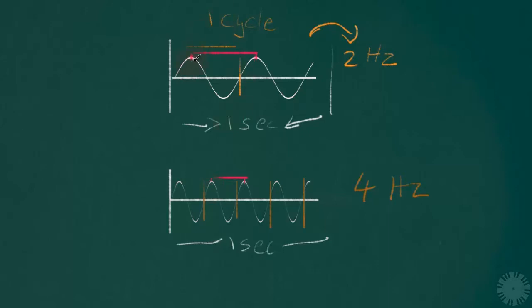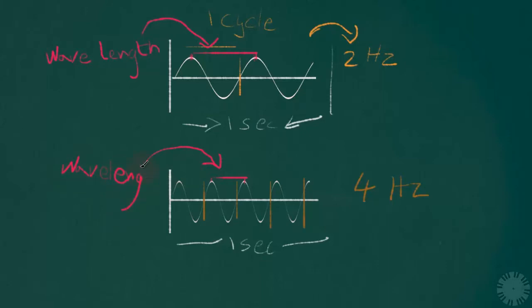So the distance between peaks or troughs decreases as the frequency increases. This distance has a term — it's called Wavelength. Wavelength is the distance between two adjacent peaks or two adjacent troughs in a wave.